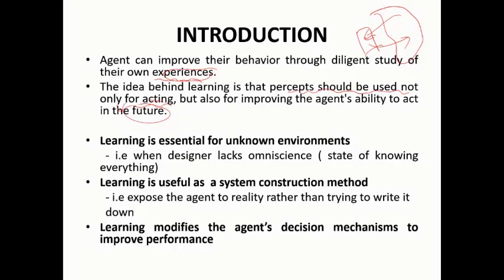By experience, the agent can gain knowledge and understanding about the environment and then perform better actions. Learning is an essential process, especially for unknown environments. If the agent doesn't know anything about the environment, it will initially try to observe a lot of information using sensors, and that learning will help guide future actions.